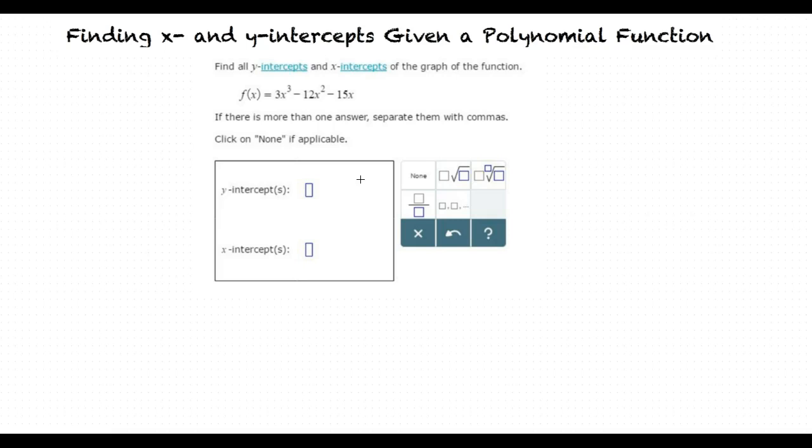Find all y-intercepts and x-intercepts of the graph of the function f(x) is equal to 3x cubed minus 12x squared minus 15x.